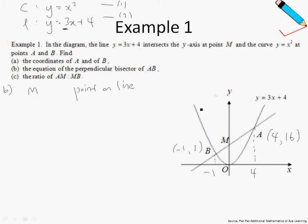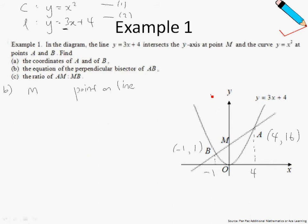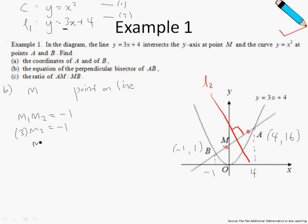Since we want the perpendicular bisector, the perpendicular bisector of line AB will make a 90-degree angle with AB, with the two distances from the midpoint being equal. The gradient of line one multiplied by the gradient of line two equals negative one because they are perpendicular. So line one's gradient is 3, and I can solve for the gradient of line two, which is negative one third. The point that lies on the perpendicular bisector is the midpoint of AB.